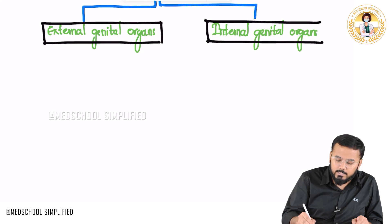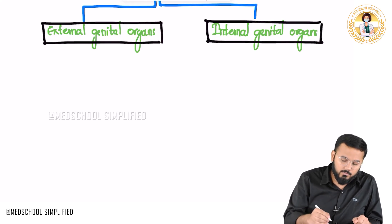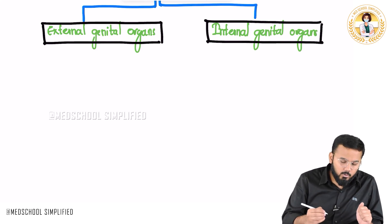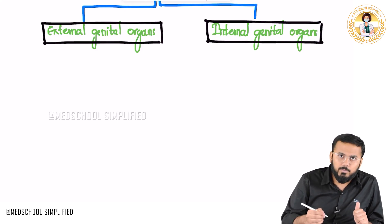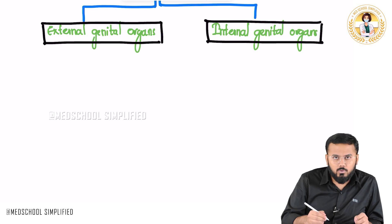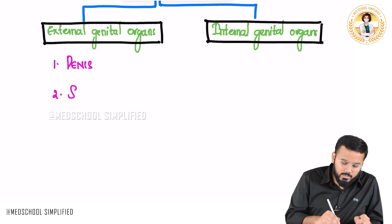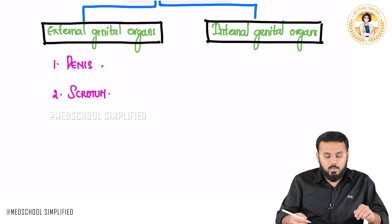When it comes to external genital organs there are two important things: one is called the penis and another one is called the scrotum. These two form the external genital organs.